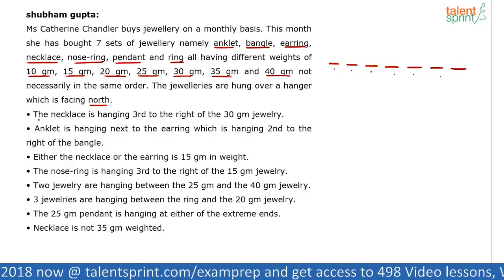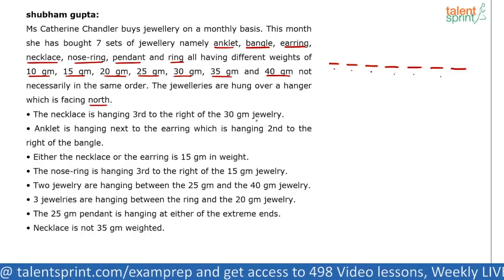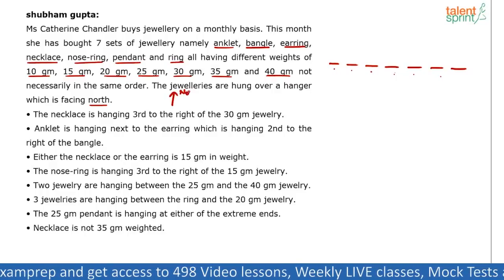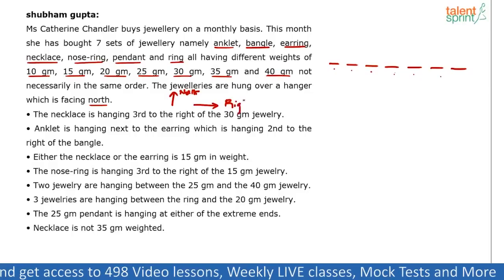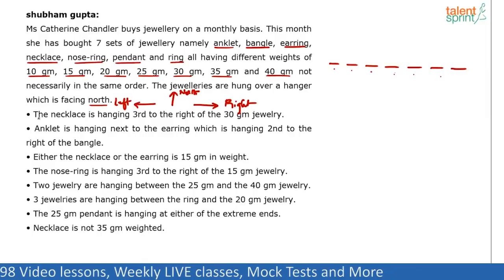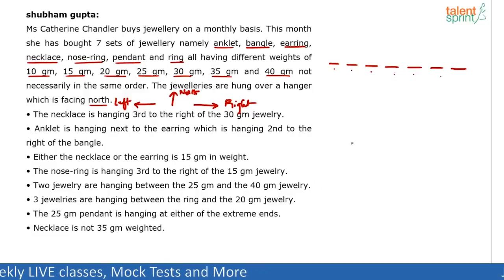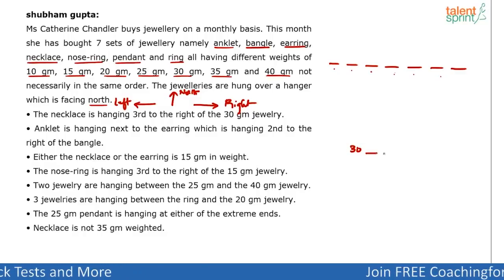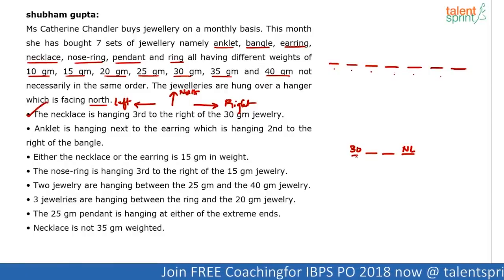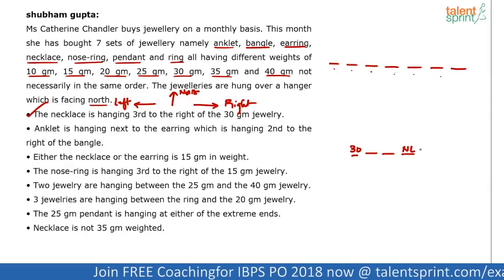Let's look at the clues. The first clue: the necklace is hanging third to the right of the 30 gram jewellery. When everything is facing north, right should be taken towards our right and left towards our left. So if the 30 gram jewellery is here, necklace is third to the right — first, second, third — here comes the necklace (NL). Right is always towards the right here.